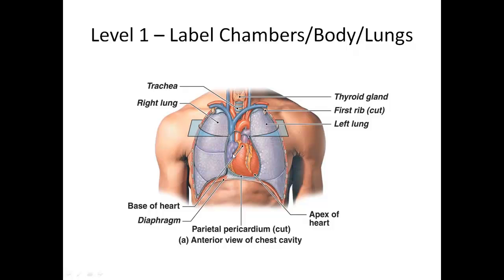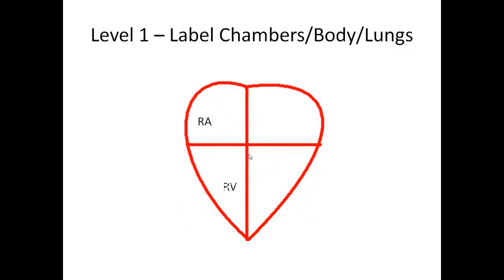The way to remember the orientation is: the person you're looking at, or the patient, is the one that matters — not your perspective. So that makes this side the right side, and the other side the left. We label: R for right, L for left, A for atrium, and V for ventricle. More than one atrium is called atria.